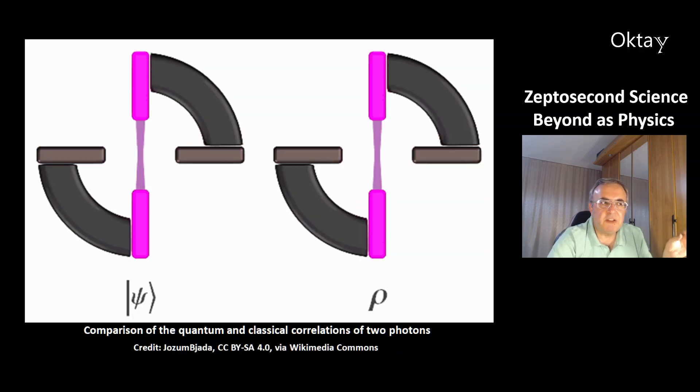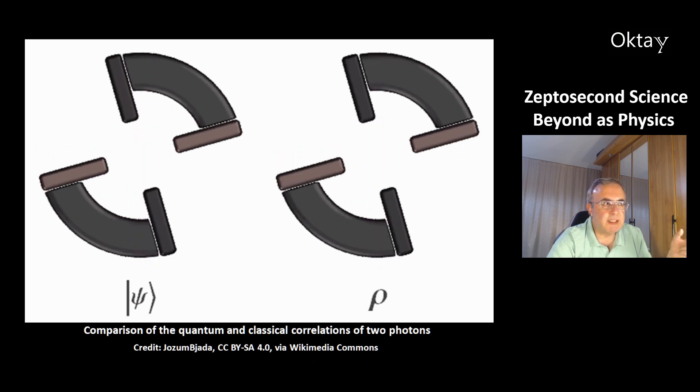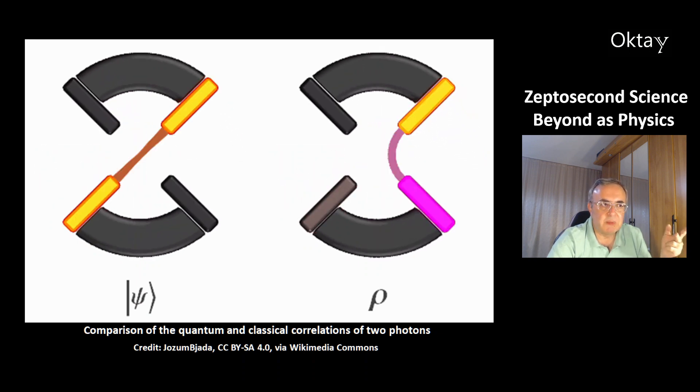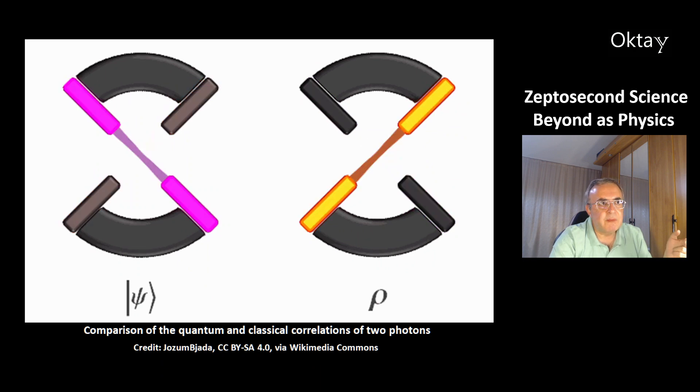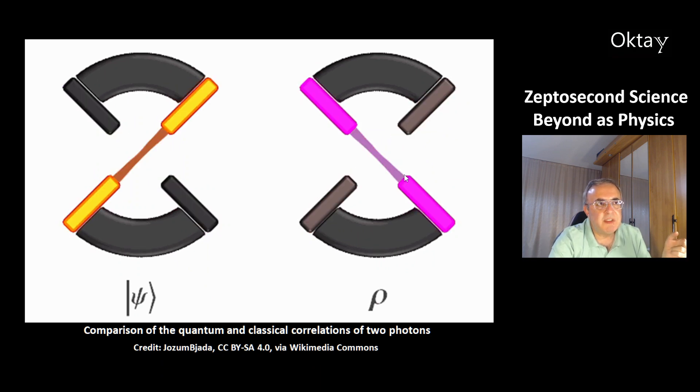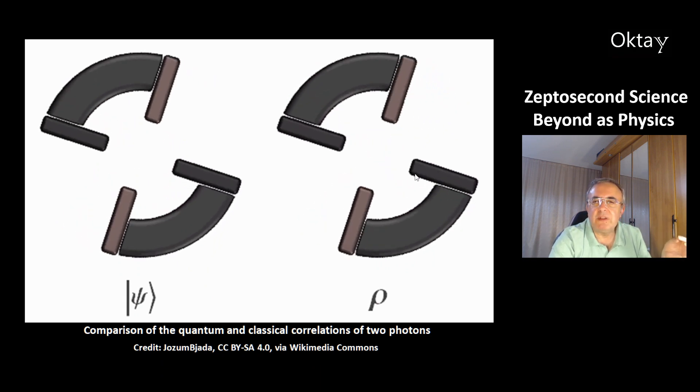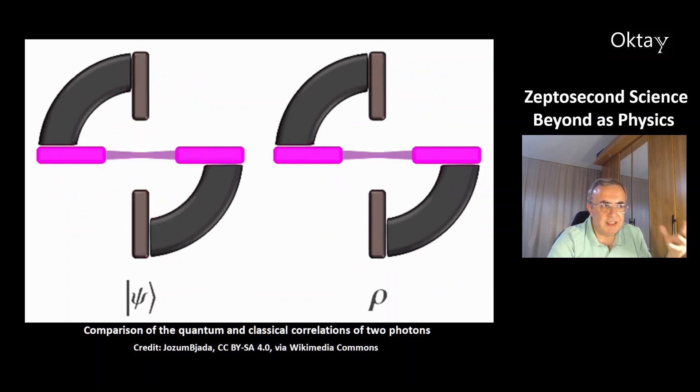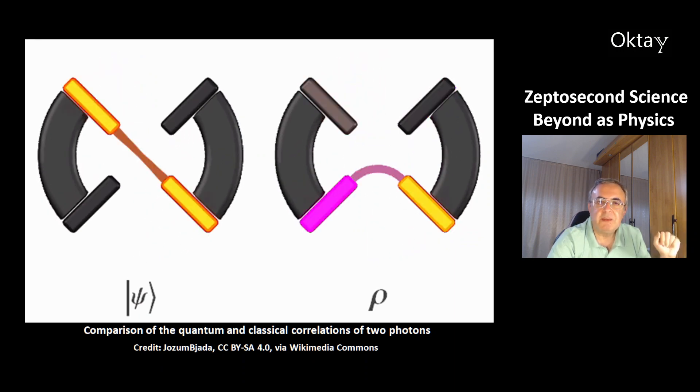This is a comparison of quantum and classical correlations of two photons. The quantum correlation is at the left, the classical is at the right. Here you can see at this moment that the two photons in the classical system have independent properties, but in the quantum world these photons are entangled, and the properties are dependent on each other.